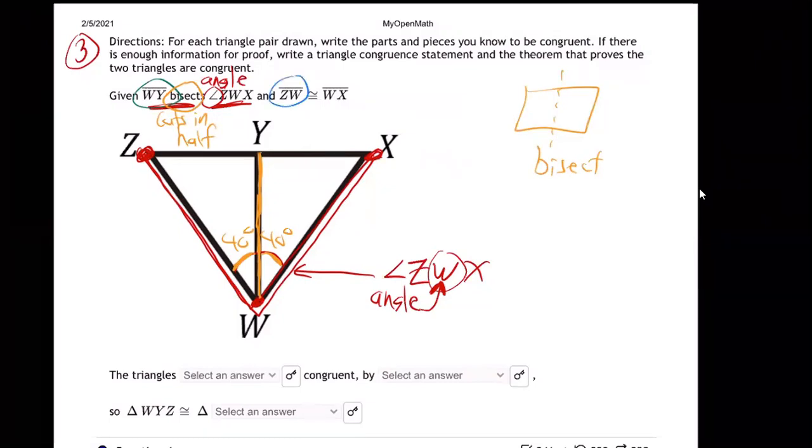And then what else do they say? They say ZW, that's side. See the line above it? That means side. Side ZW is identical to side WX. So ZW, meaning this side and this side, these are equal. Like maybe this is 10 and this is 10. Those are equal sides.